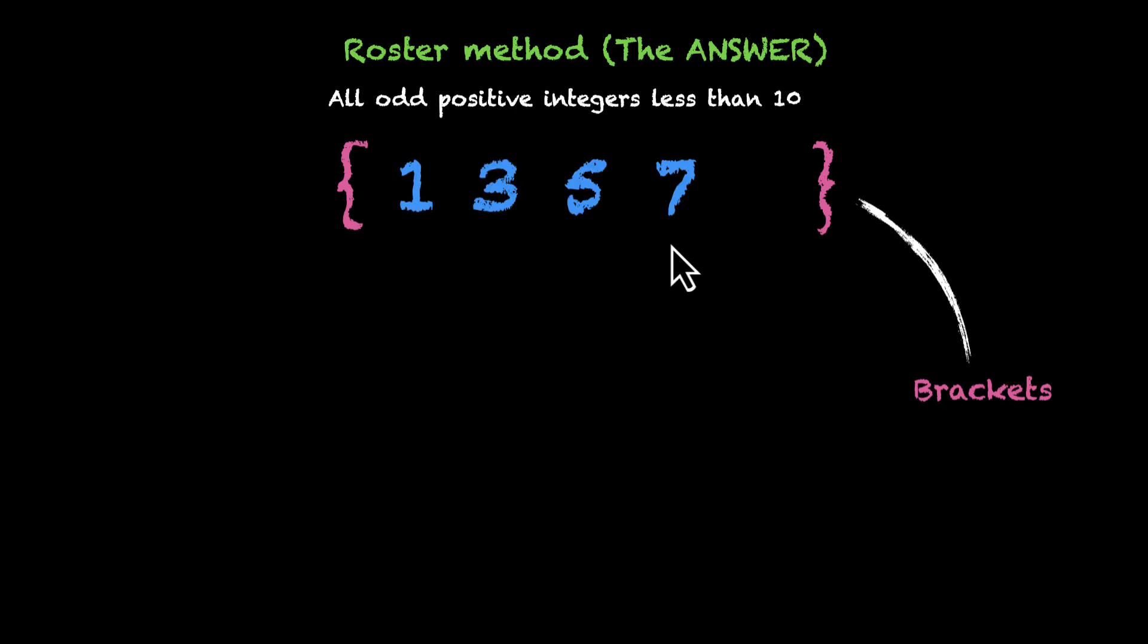That's 1, 3, 5, 7 and 9. So that's your answer. We call them elements and then you separate these elements using commas. So that's your commas. This is how you write in the roster method.